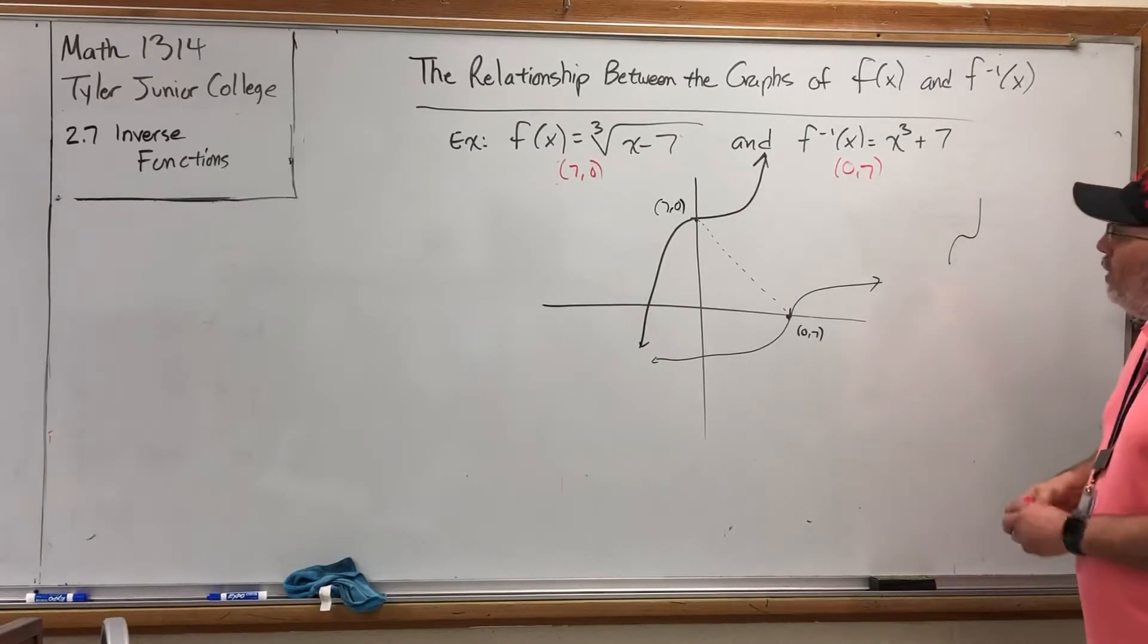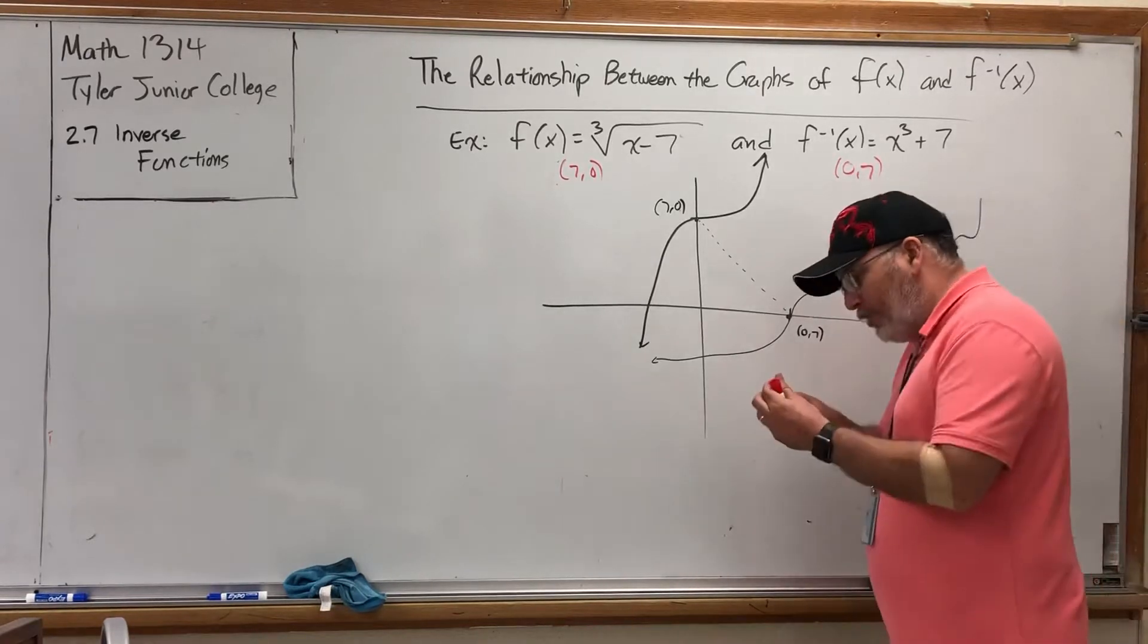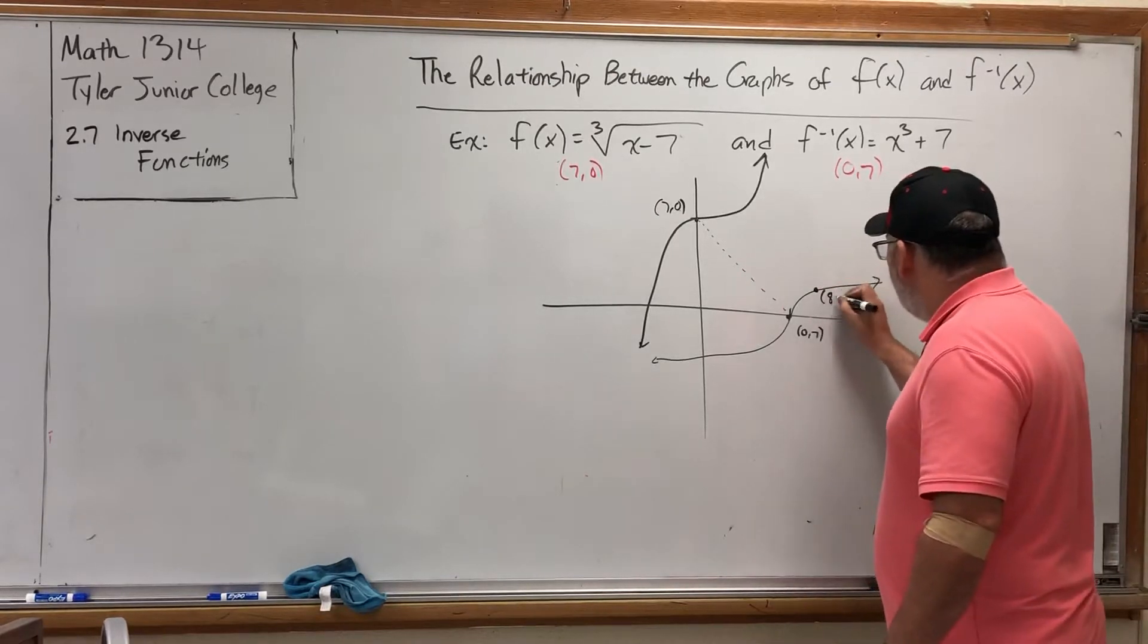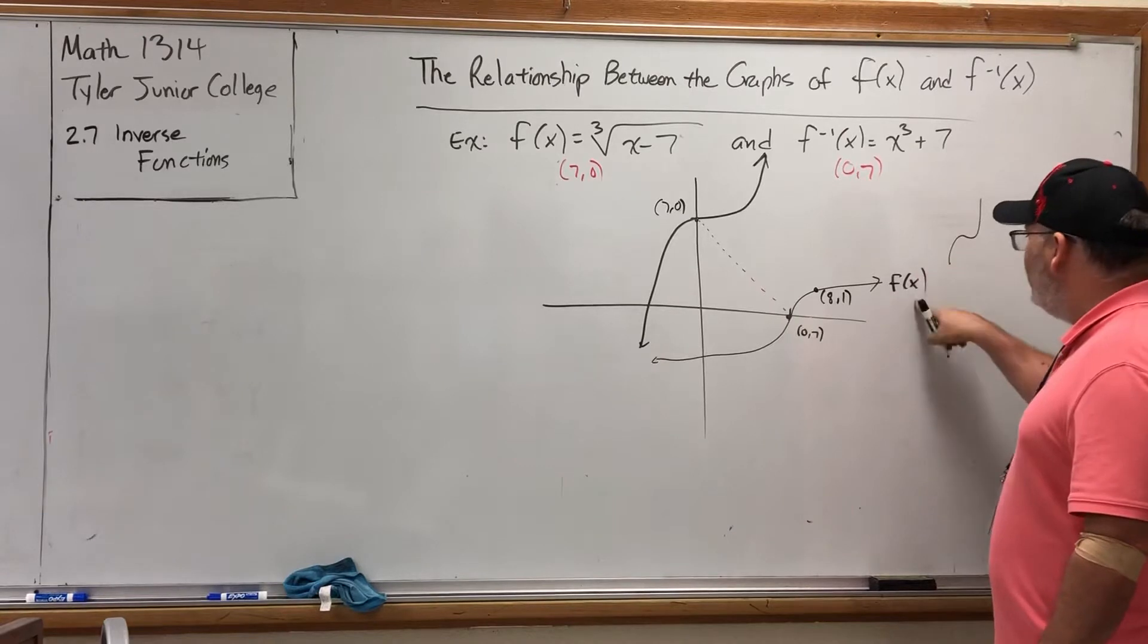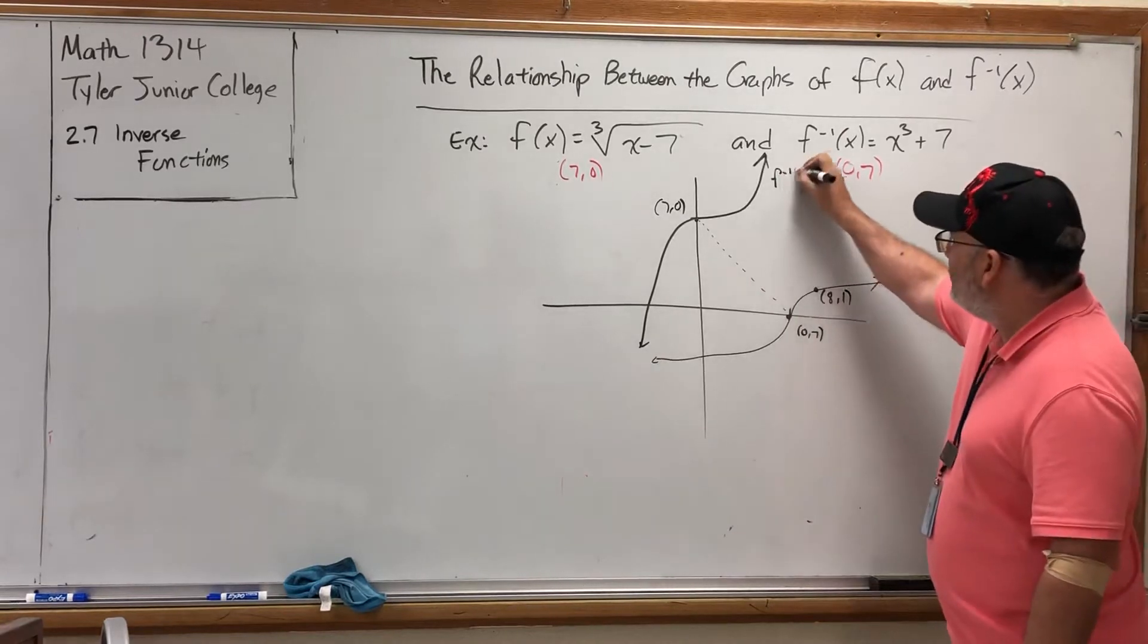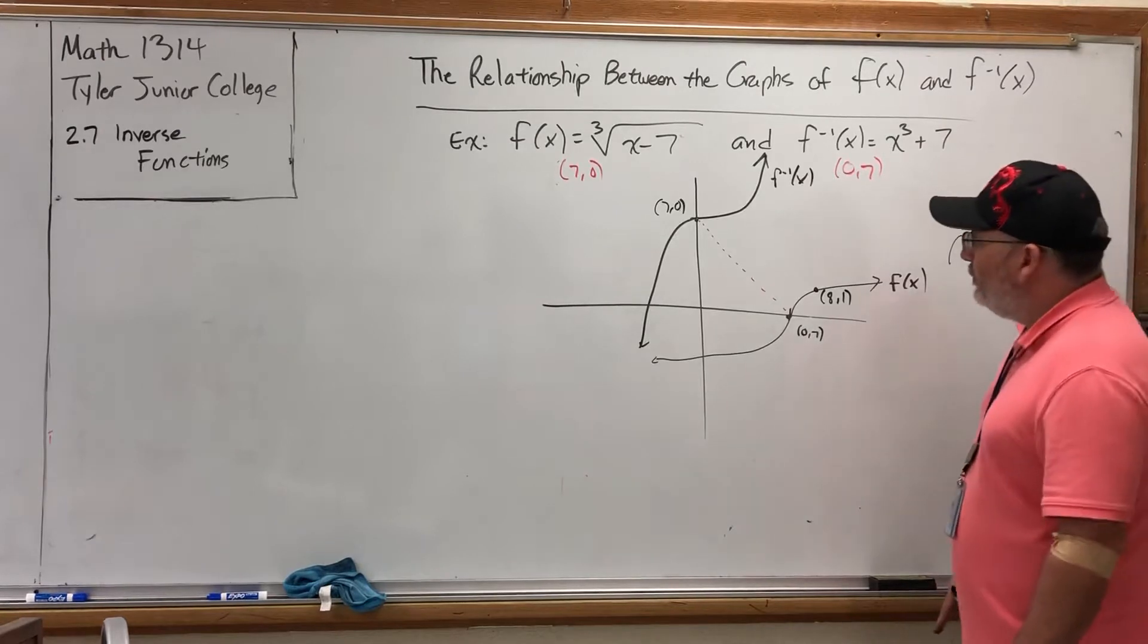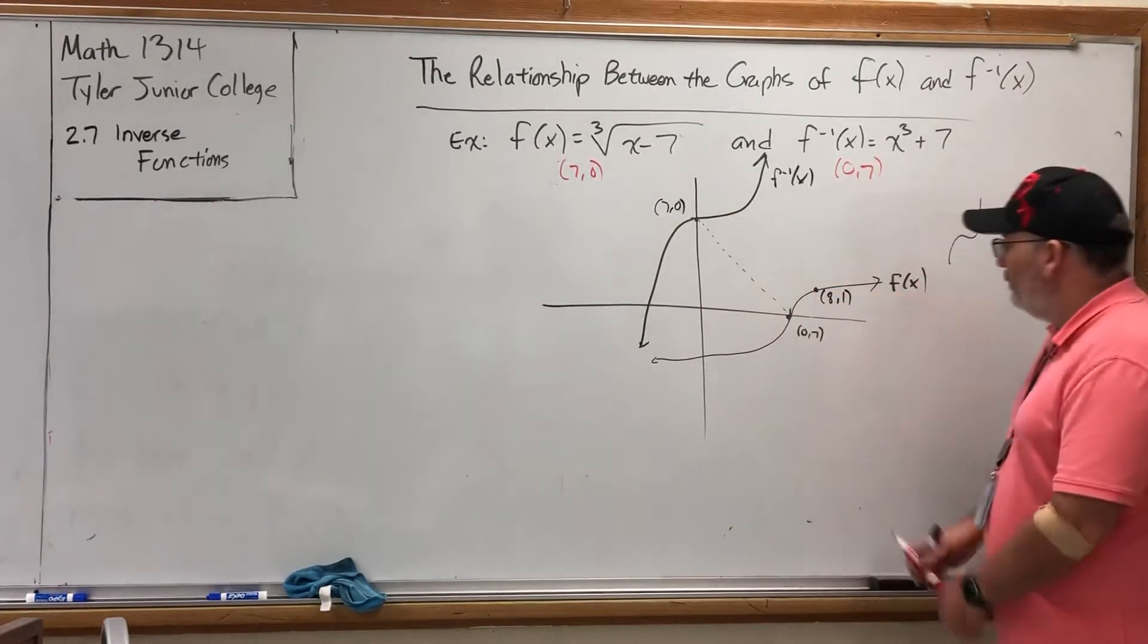For example, without going into too much detail, the ordered pair (8,1) is on the function f(x). And I should label that this is f(x), this one is f inverse of x. I know (8,1) is on there because 8 minus 7 is 1 and the cube root of 1 is 1.